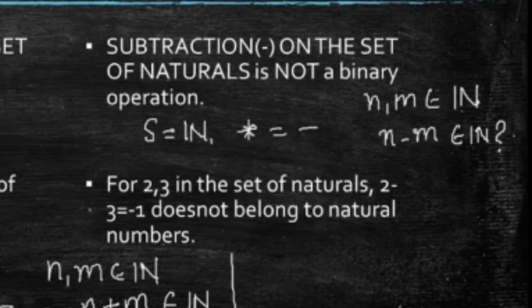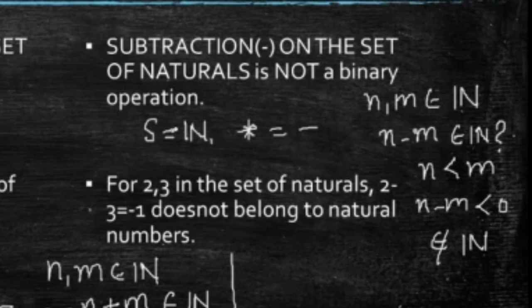But, natural numbers have a natural ordering. I know, whenever n is less than m, n minus m will be less than 0. And, this does not belong to naturals. Any number which is less than 0 cannot belong to naturals. And hence, this operation on the set of naturals is not a binary operation. So, basic two examples, to make you understand the difference. If you are keeping the set unchanged, but you have changed the operation, then you have to check whether it's binary or not.